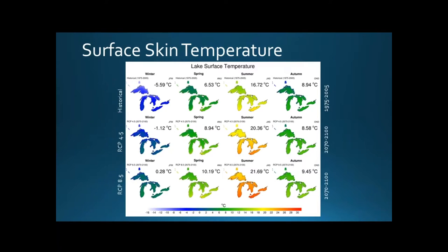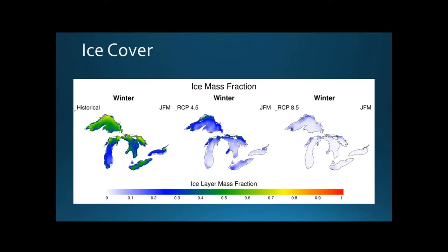Here are spatial distribution plots of historical, RCP 4.5, and RCP 8.5 distributions of ice cover. What you're looking at with ice mass fraction is the percentage or fraction of the top layer of the lake — the top 10 centimeters — that is ice as opposed to water. You can see that from the historical simulation to both RCP simulations there are drastic decreases, especially in the 8.5 simulation. It is a little more drastic-looking than it actually is because the historical simulation overestimates ice cover by a little bit, so those values are slightly too high in the historical plot, but it's still a very large decrease that we can see effects of in the other climate variables.